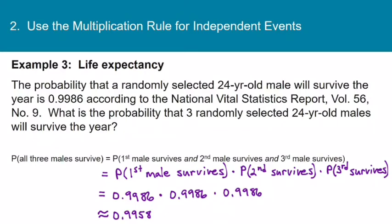I've made a big deal about rounding probabilities to three decimal places, but in this section the decimals we're dealing with are so small that the instructions will tell you how many decimal places to keep. So read the instructions in MyLabsPlus — sometimes it might be four decimal places, sometimes five. I'm going to keep four decimal places on most examples in this section, but keep an eye out for the instructions.